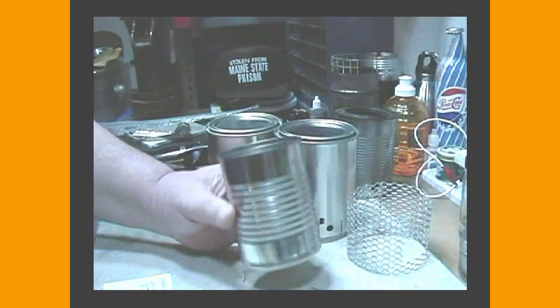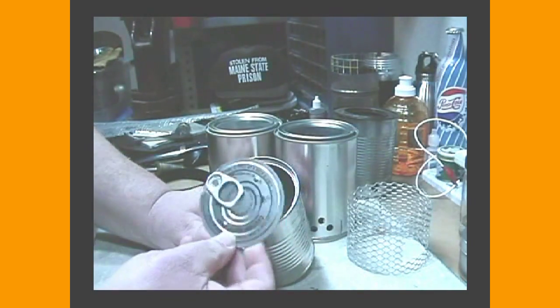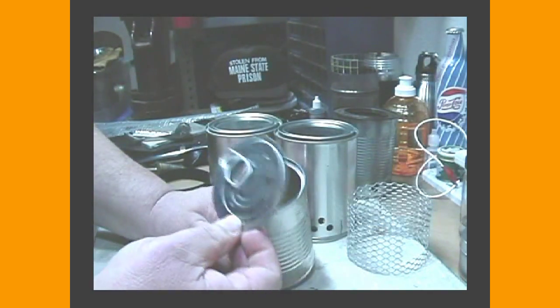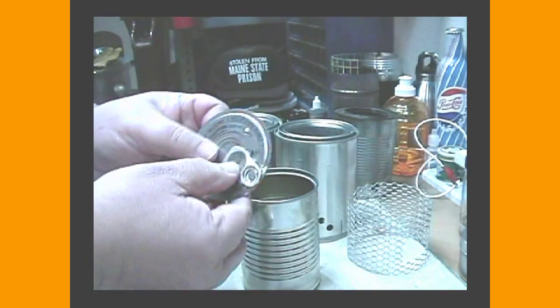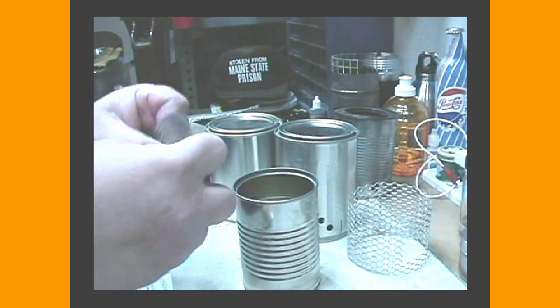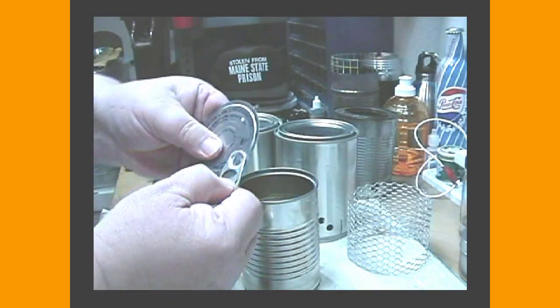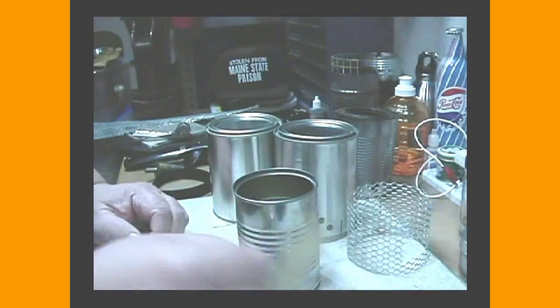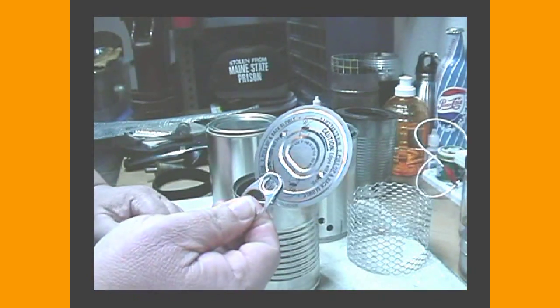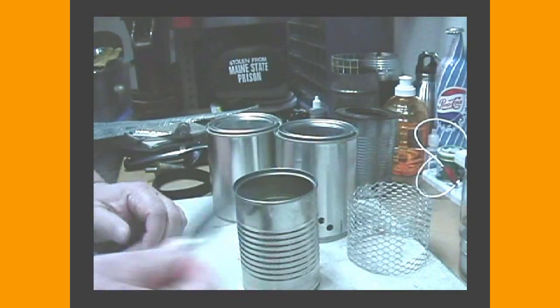And this can, now they come with the pull tops on them, don't throw these away. These pull tops, if you just take the tab, turn it to the side, just like so, it becomes a snuffer that you might use on other alcohol stoves. So just hang on to them.